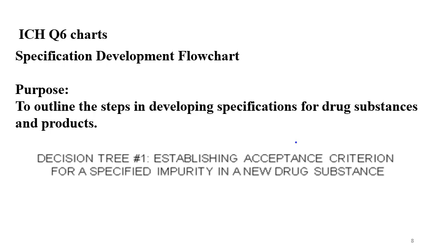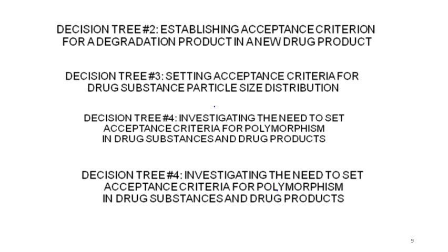Flow chart number 1 is for establishing specific acceptance criteria for a specified impurity in a new drug substance. Decision tree 2 is for establishing acceptance criteria for a degradation product in a new drug product. Decision tree 3 is for setting acceptance criteria for drug substance particle size distribution — that is PSD testing and acceptance criteria. Decision tree 4 is for investigating the need to set acceptance criteria for polymorphism in drug substance and drug product.